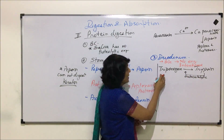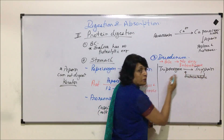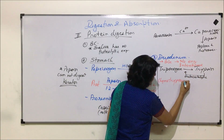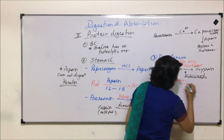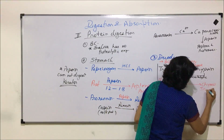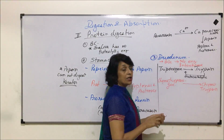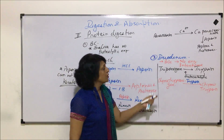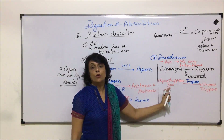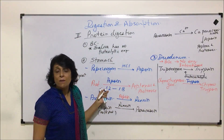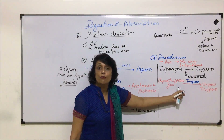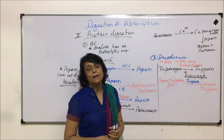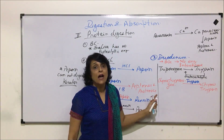The next inactive enzyme is chymotrypsinogen, which has to be activated into chymotrypsin, and this activation is done by trypsin. All these reactions taking place in the duodenum occur at a basic pH, unlike the acidic pH in the stomach. The pH here is basic — around 8.6 to 8.8. Other enzymes like procarboxypeptidase are also activated at this stage.